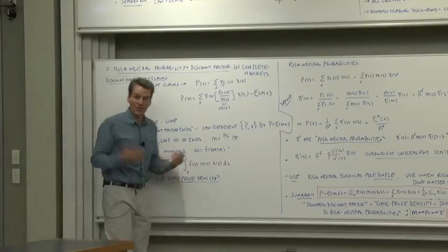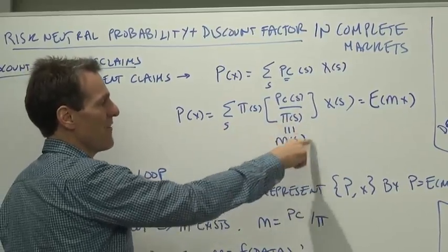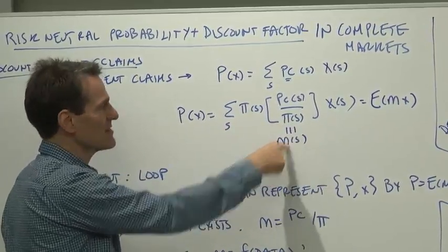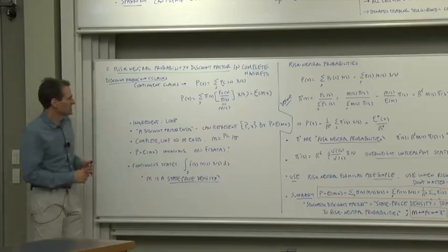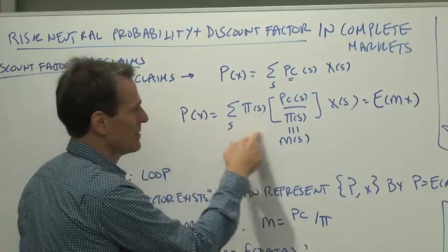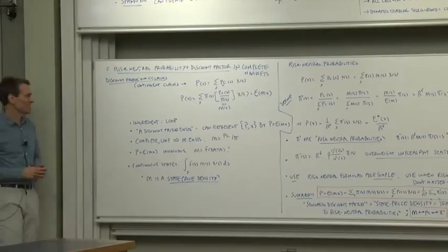To make that look prettier, something like what we've seen before, why don't we just multiply and divide by probabilities and define m of s, define the discount factor as the contingent claims price divided by probabilities. Then we represent the prices of the payoffs by expected discounted payoff. There's our friend, the discount factor.